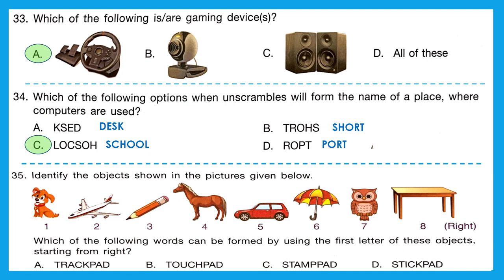Question 35: identify the objects shown in the pictures below and find the word formed by their first letters starting from the right. Table gives T, owl gives O, umbrella gives U, car gives C, horse gives H, pencil gives P, aeroplane gives A, and dog gives T. Together they spell T-O-U-C-H-P-A-D, which is option B, touchpad. The right answer is option B, touchpad.